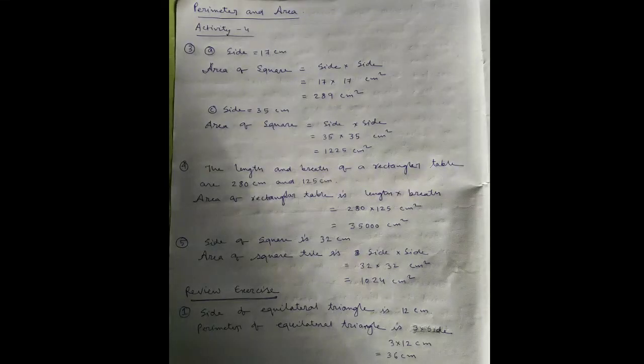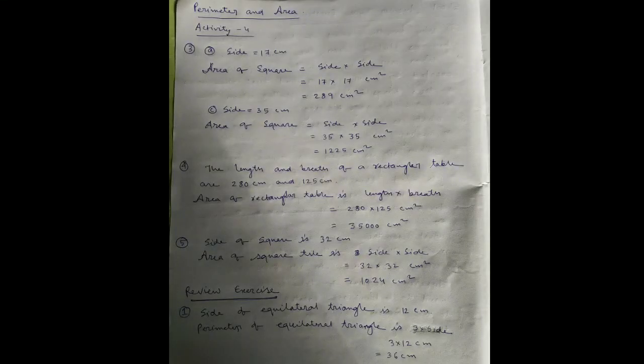Good morning students, welcome to my new class. From perimeter and area activity 4, number 3: side is given as 17 centimeters. Area of a square is side into side, equal to 17 into 17 centimeter square, which equals 289 centimeter square.